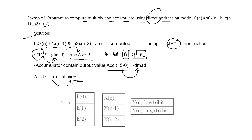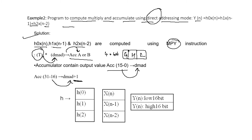Here is a diagram explaining the computation. h is the coefficient, x is the input, and y is the output. h(0) multiplied with x(n), added with h(1) multiplied with x(n-1), added with h(2) multiplied with x(n-2). Finally, the result is stored in y(n) and y(n+1) — that is, the lower 16-bit data and the higher 16-bit data.